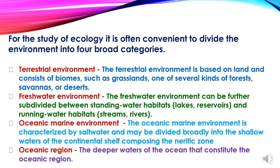Third is the oceanic marine environment, which is categorized by salt water and may be divided broadly into the shallow waters of the continental shelf composing the neritic zone. Fourth is the oceanic region, comprising the deeper waters of the ocean.